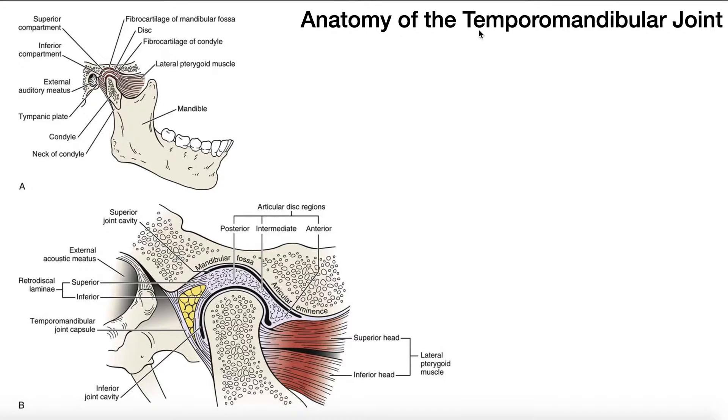In this video, we're going to be discussing the anatomy of the temporomandibular joint, or the TMJ. This is the joint that we hinted at in the previous video when we talked about the major muscles of mastication, so chewing.